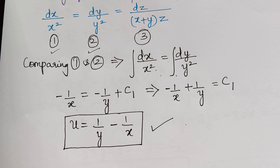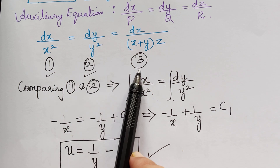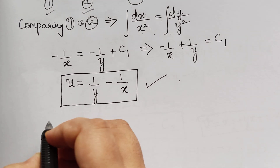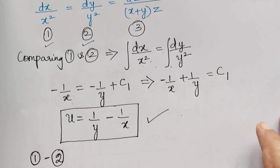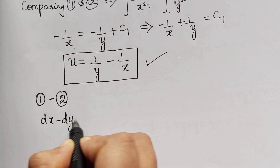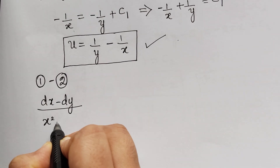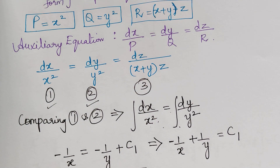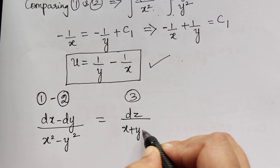Next we have to obtain the second solution v, for which we check whether we can compare the other ratios. We are not able to compare ratios 1 and 3, nor ratios 2 and 3, so we have to perform some operations. We form a new ratio using 1 minus 2, giving dx minus dy in the numerator divided by x squared minus y squared in the denominator, and this equals the third ratio dz by x plus y multiplied with z.